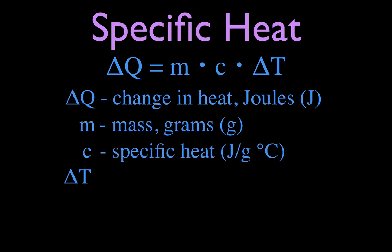And then specific heat - C is a symbol for specific heat, which is the joules, the number of joules per gram per degree Celsius. It's the definition of specific heat: the number of joules of energy it takes to raise one gram of something one degree Celsius.